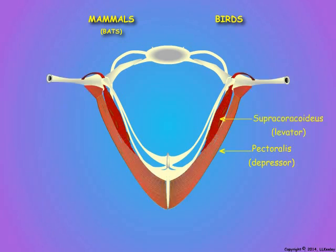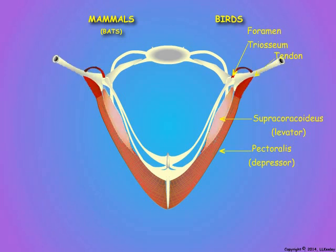The supracoracoideus muscles attach to the sternum carina beneath the pectoralis muscles, and a tendon from the supracoracoideus muscle loops through an opening in the coracoid bone called the foramen triosseum, connecting to the humerus to elevate it during the upstroke.